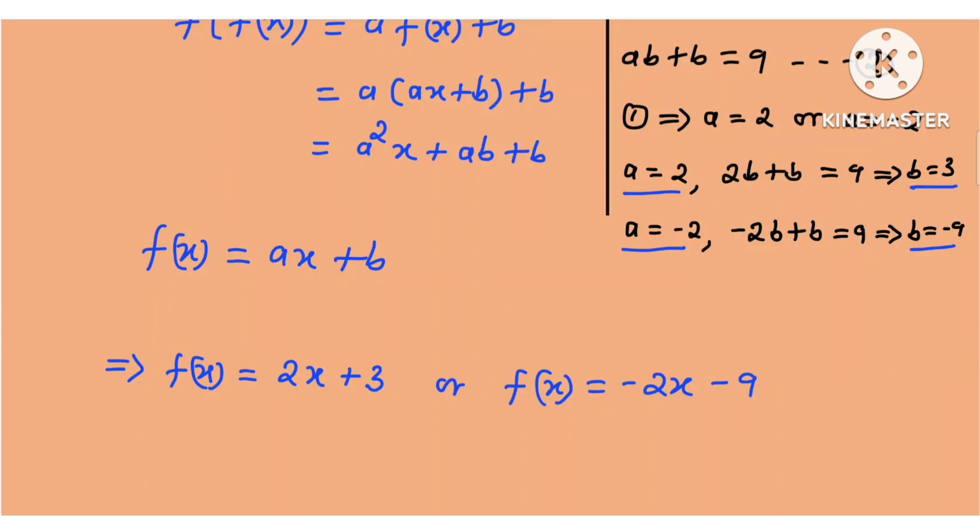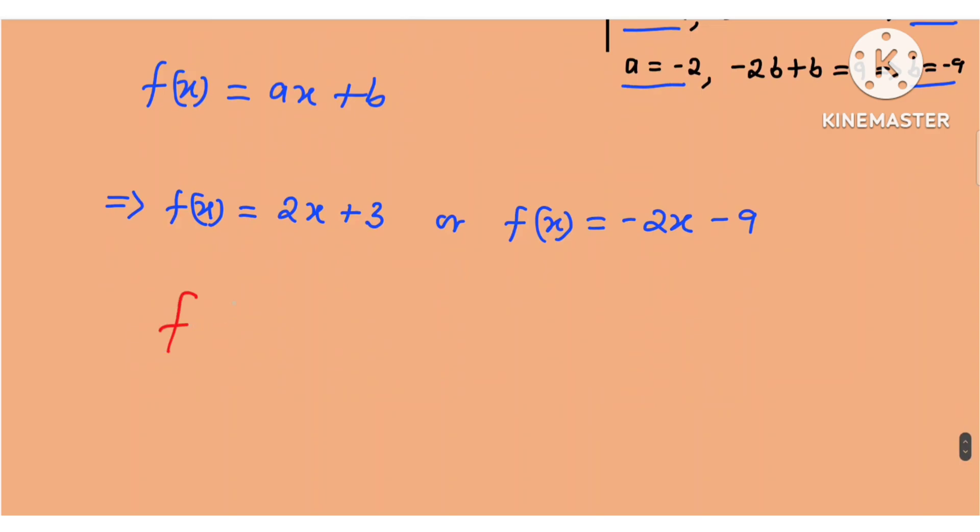And therefore, we can see that there are 2 possible functions f such that f composed with itself gives 4x plus 9. Thanks for watching and see you in the next video.